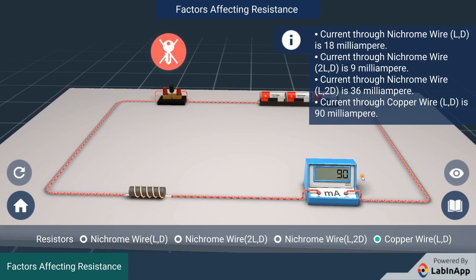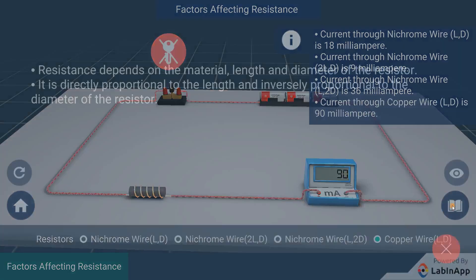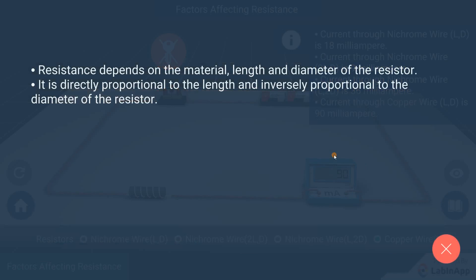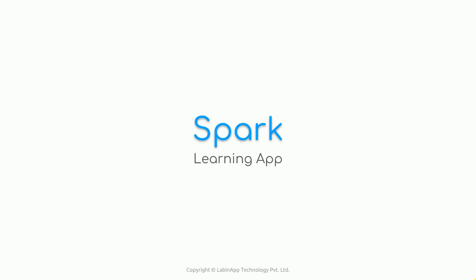Hence, we find that resistance depends on the material, length, and diameter of the resistor. It is directly proportional to the length and inversely proportional to the diameter of the resistor.